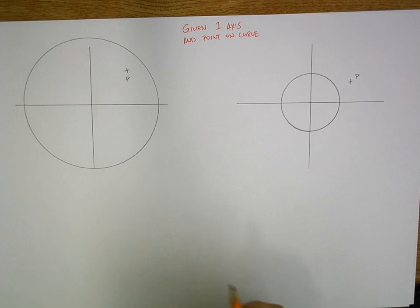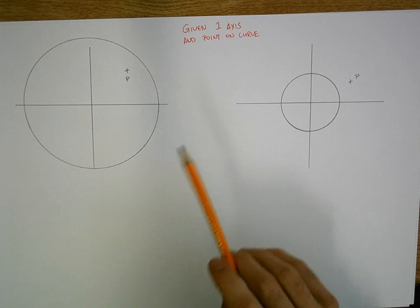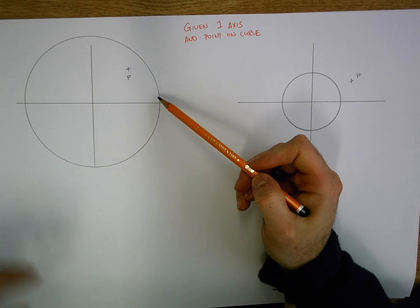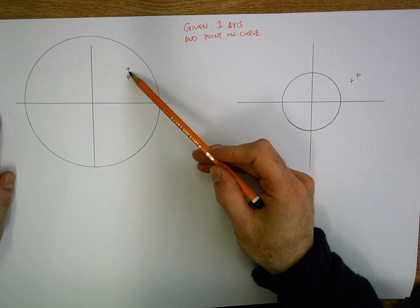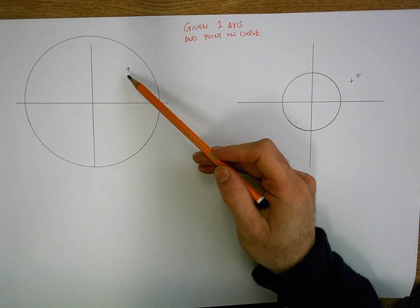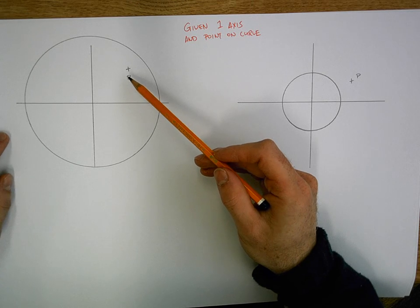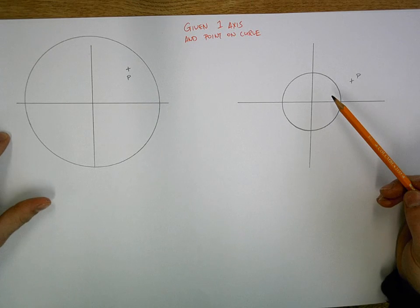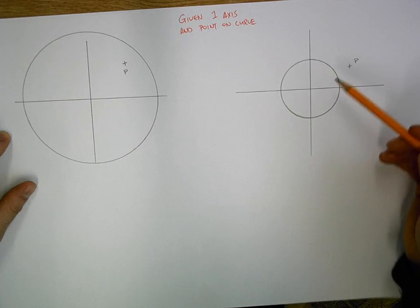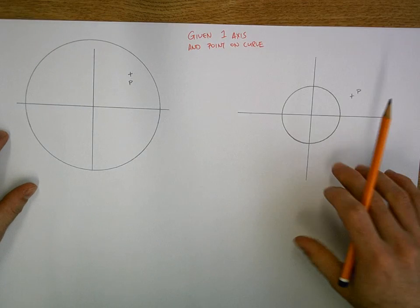Okay, so I've set up two examples here. The first one on the left hand side is where you're given the major axis of your ellipse and point P, and you have to find your minor to draw the actual ellipse itself. The other case on the right hand side is the exact opposite - you're given the minor and point P and you find the major. We're going to go through both of those.